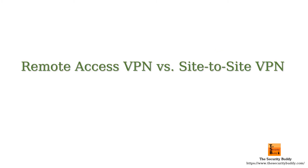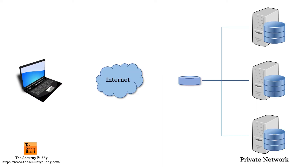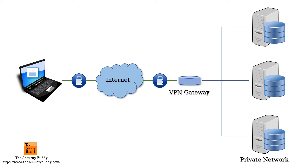Remote Access VPN and Site-to-Site VPN. In a Remote Access VPN, client software is installed on the VPN user's device. When the user wants to connect to the VPN, the client software initiates the VPN tunnel setup. The VPN gateway on the organization's network authenticates the user, and on successful authentication, a VPN tunnel is created with the VPN gateway as one endpoint. When the user wants to send any data, the user's device encrypts the data and sends it across the tunnel. The VPN gateway can decrypt and read the data.